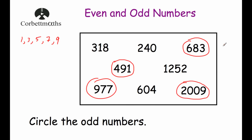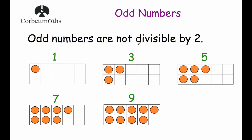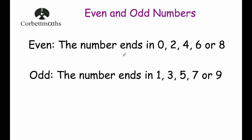And that's it. So even numbers are numbers that are divisible by 2. Odd numbers are numbers that are not divisible by 2. If a number ends in a 0, 2, 4, 6 or 8 — it's even. Or if it ends in a 1, 3, 5, 7 or 9 — it's going to be odd.